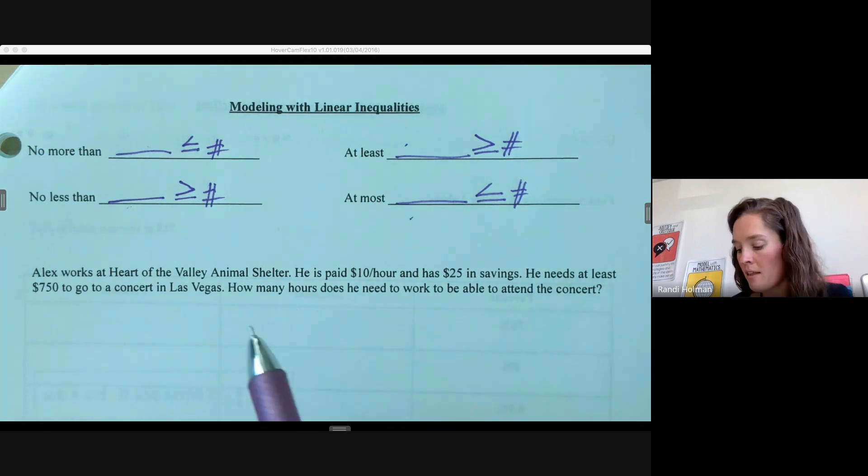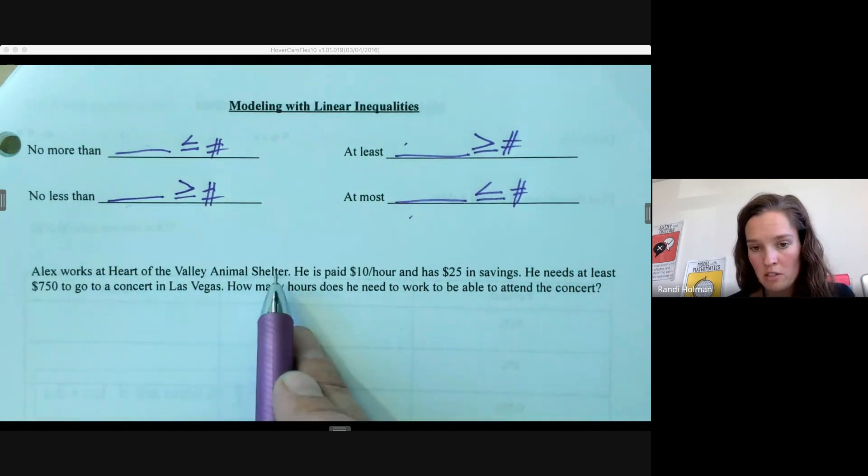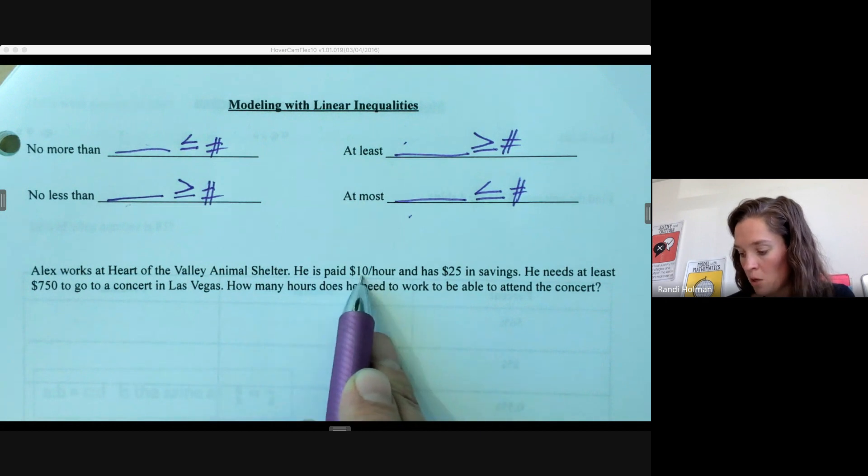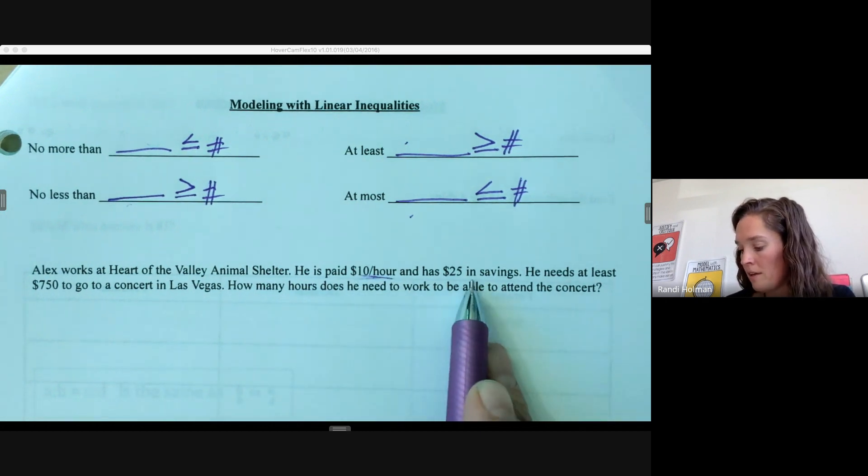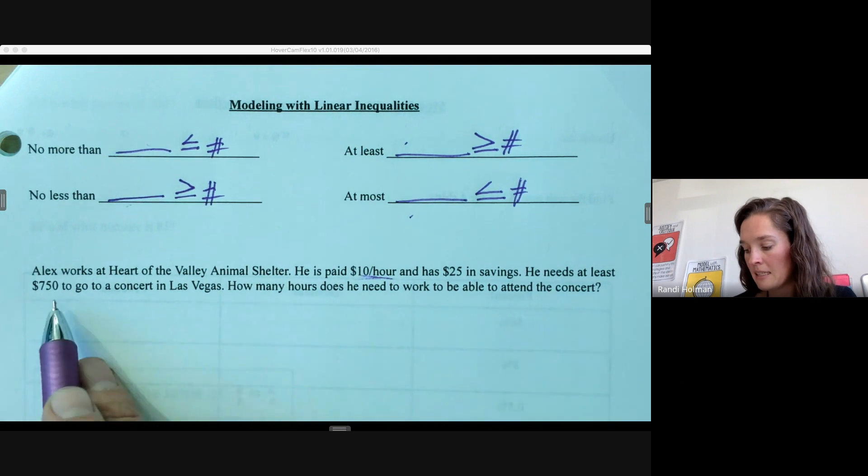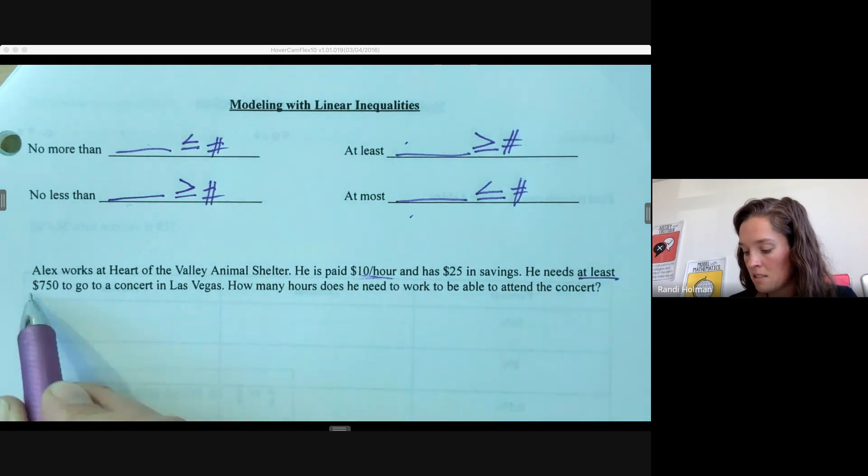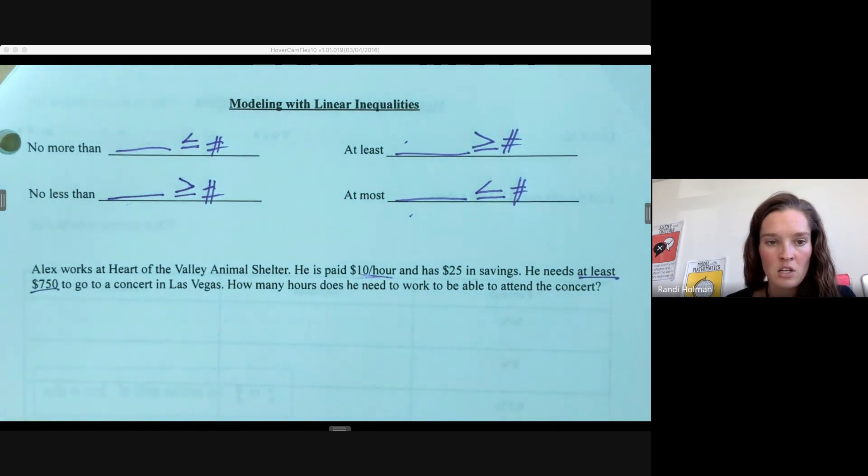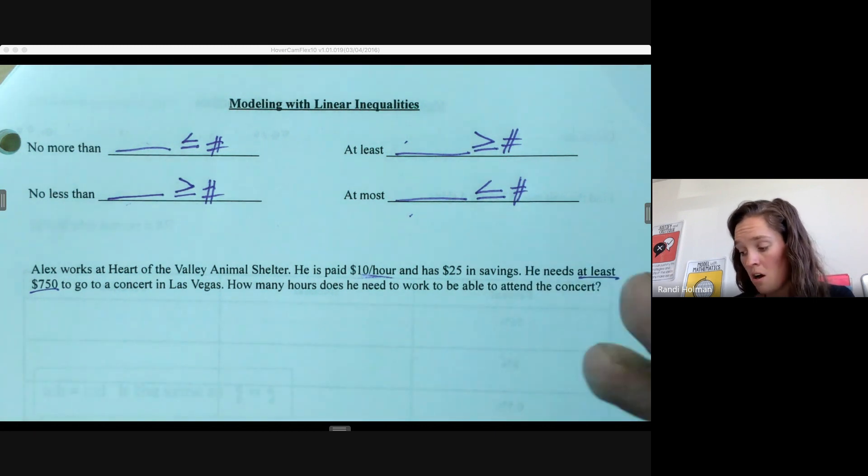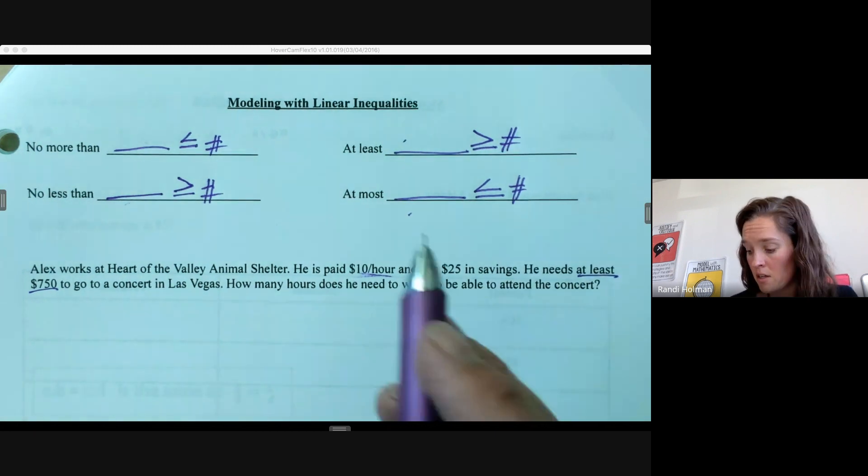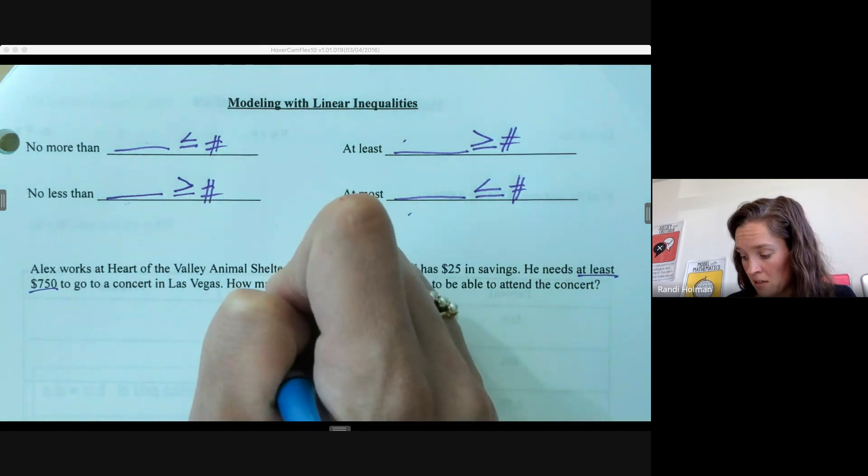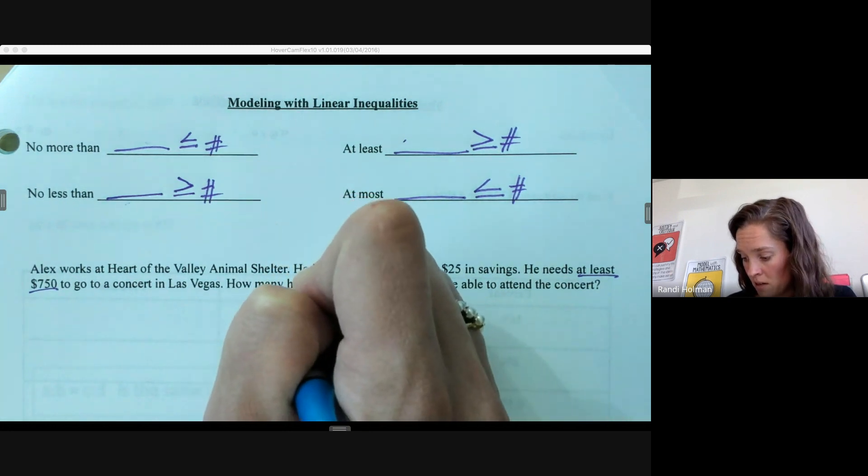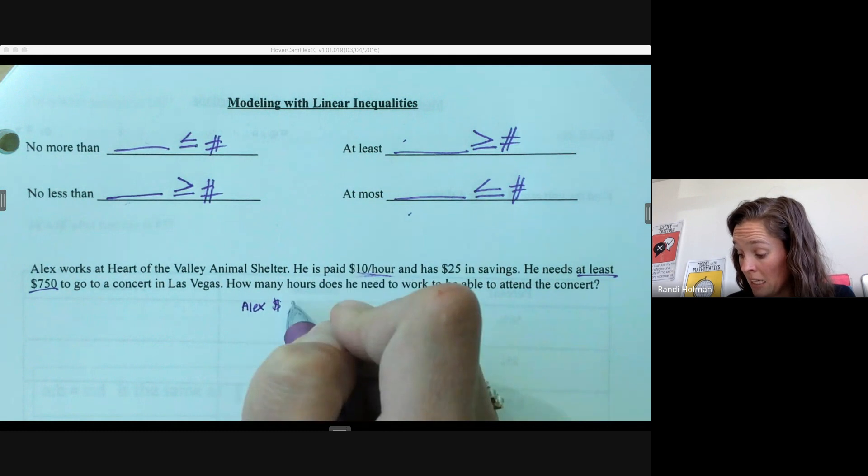Alex works at Heart of the Valley Animal Shelter. He is paid $10 per hour and has $25 in savings. He needs at least $750 to go to a concert in Las Vegas. How many hours does he need to work to be able to attend the concert? We know he already has $25, so Alex's money has to be at least $750.